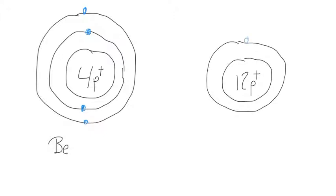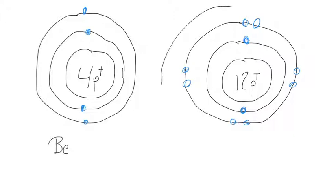On our second shell, it has a maximum of eight, so we'll draw eight there. And on our last shell, we'll draw our remaining two electrons.